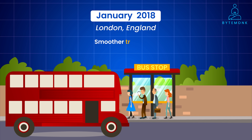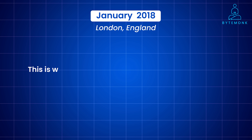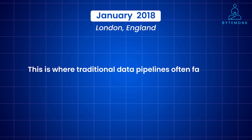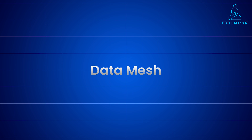The result? Smoother traffic flow, happier commuters, and a more data-driven approach to managing London's vast transportation network. This is where traditional data pipelines often fall short. Complex infrastructures, slow development cycles, and siloed data all make it difficult to get the insights you need. And that is where data mesh comes in.